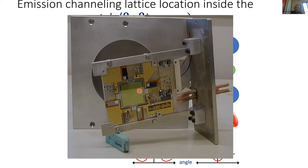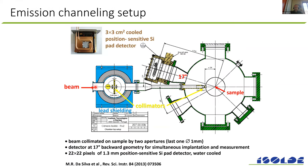Here you see an example of one of these two-dimensional detectors — what they look like in reality. These detectors were developed for medical applications for X-ray and PET scans by the TimePix and MediPix collaborations, and found a niche application for emission channeling for solid state physics. A typical chamber: beam comes in very finely focused — less than one millimeter control of where we implant — which allows high resolution from the emitted particles. The two-dimensional detector is mounted at 17 degrees to the incoming beam.